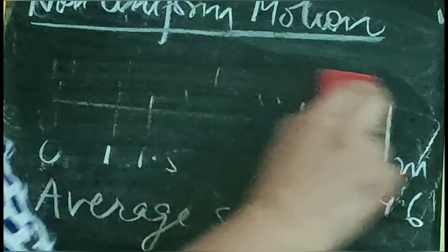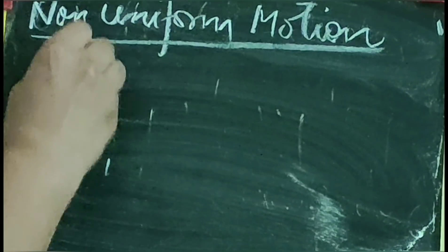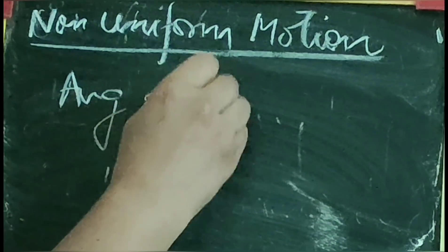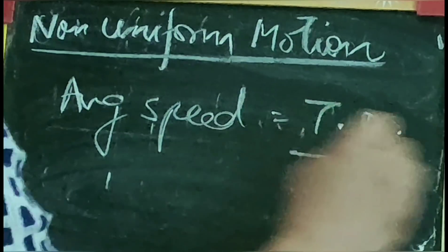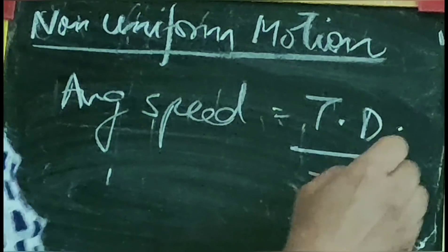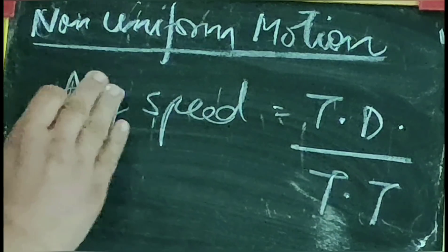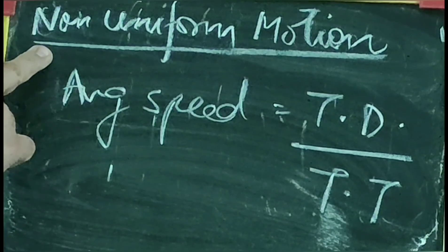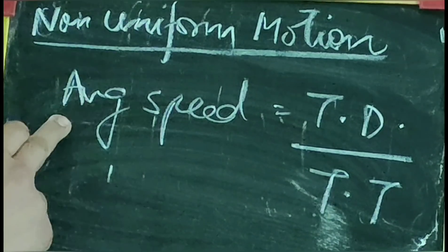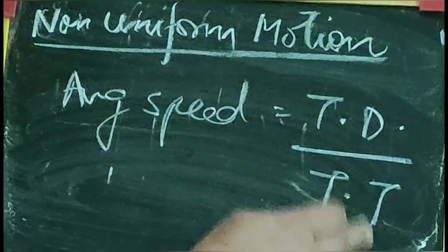Average speed is defined as total distance covered by the object divided by total time taken to cover that distance. Normally we define speed as distance upon time, but when it is non-uniform motion, average speed is defined as total distance upon total time.